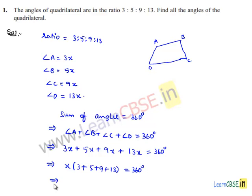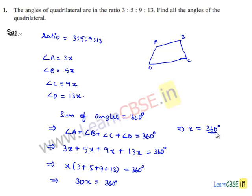Now, 3 + 5 = 8, 8 + 9 = 17, and 17 + 13 = 30, so we get 30x = 360 degrees. By transposing 30 to the right-hand side, x = 360 ÷ 30, and 30 goes into 360 twelve times. So x is equal to 12 degrees.